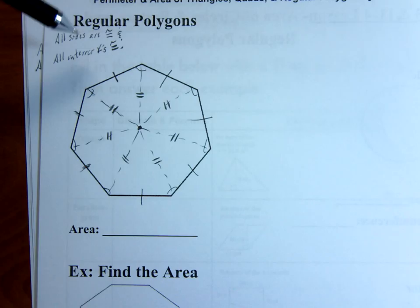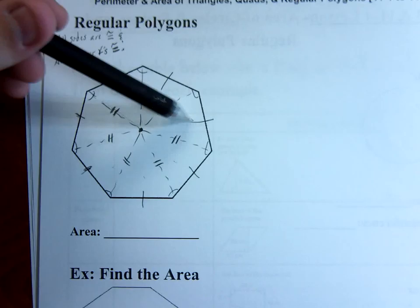So we have a regular polygon. All the sides are congruent, all the interior angles are congruent, and these distances are now all congruent.